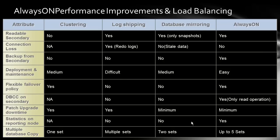For connection loss on secondary reads: in log shipping, whenever you replay the logs the existing connections are dropped. In database mirroring you can create a snapshot, but it holds stale data and you have to refresh the snapshot repeatedly. With Always On there is no connection loss — users continue to access read-only operations on the mirror without worrying about connections dropping or stale data.